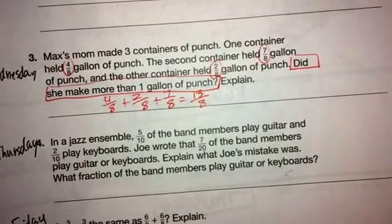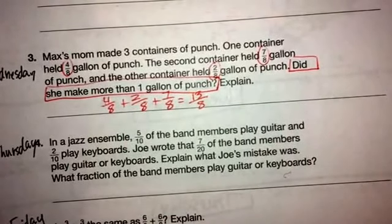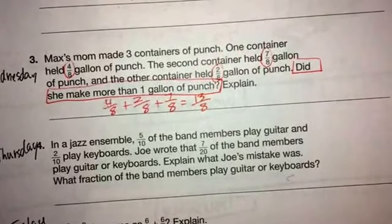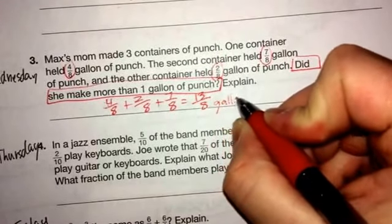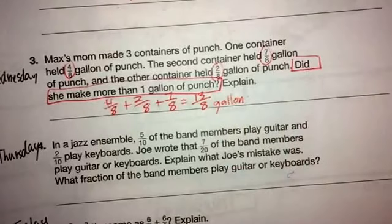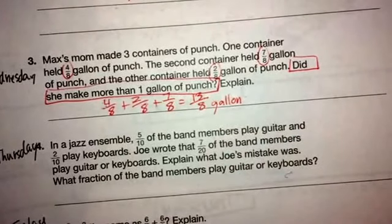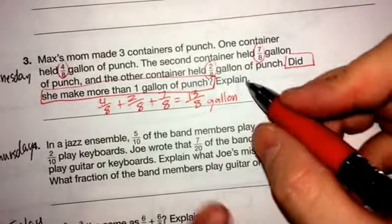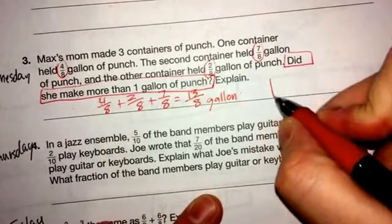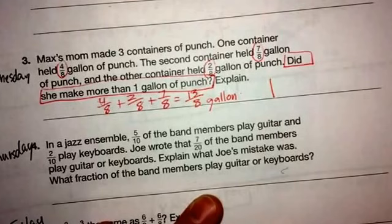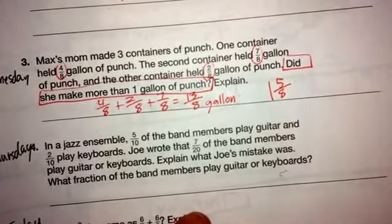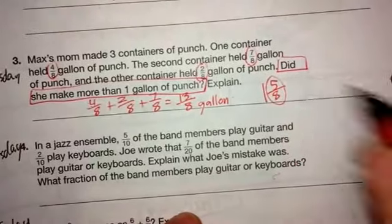And right now I can tell that she made more than 1 gallon of punch. Because she has 13/8 of a gallon. And 13/8 is an improper fraction. So we know that we definitely have more than 1 gallon. Because once we divide 13 by 8, we should be able to see that we have 1 and 5/8 of a gallon left. So she definitely made 5/8 more than 1 gallon.